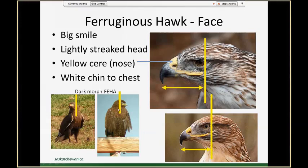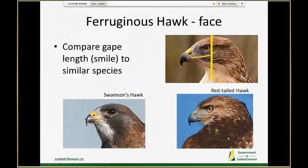You can see that gape length goes quite a ways back to the ends of their eyes. When we compare them to a Swainson's and a red-tailed hawk, you can see that Ferruginous hawks have a really large beak relative to these other two hawk species — a long beak that also goes the farthest back on their heads.